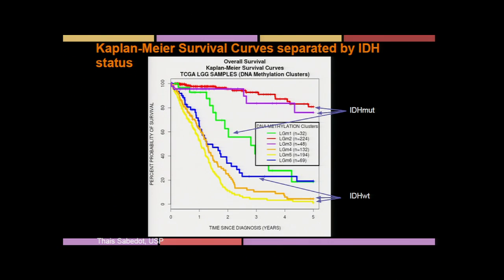Survival analysis shows strong stratification by these LGM methylation clusters. LGM1, 2, and 3, which are IDH mutants with a higher methylation profile, have the overall best survival. However, there is a subset we termed LGM1 that has lower survival, and this is quite significant even after adjustment by tumor type and age. IDH wild type also shows a striking difference in survival, with LGM6 showing a tendency for improved survival.